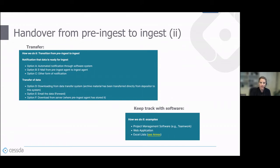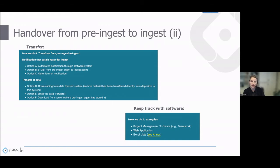How you hand over data from pre-ingest to ingest varies greatly: some archives use automatic notification to a software system, others use email to inform the ingest agent. Data transfer also varies — ingest staff might download from a data transfer system, via email, or from a server. In most archives it's necessary to keep track with some kind of software of the data status, whether through project management software, a web application, or Excel lists.